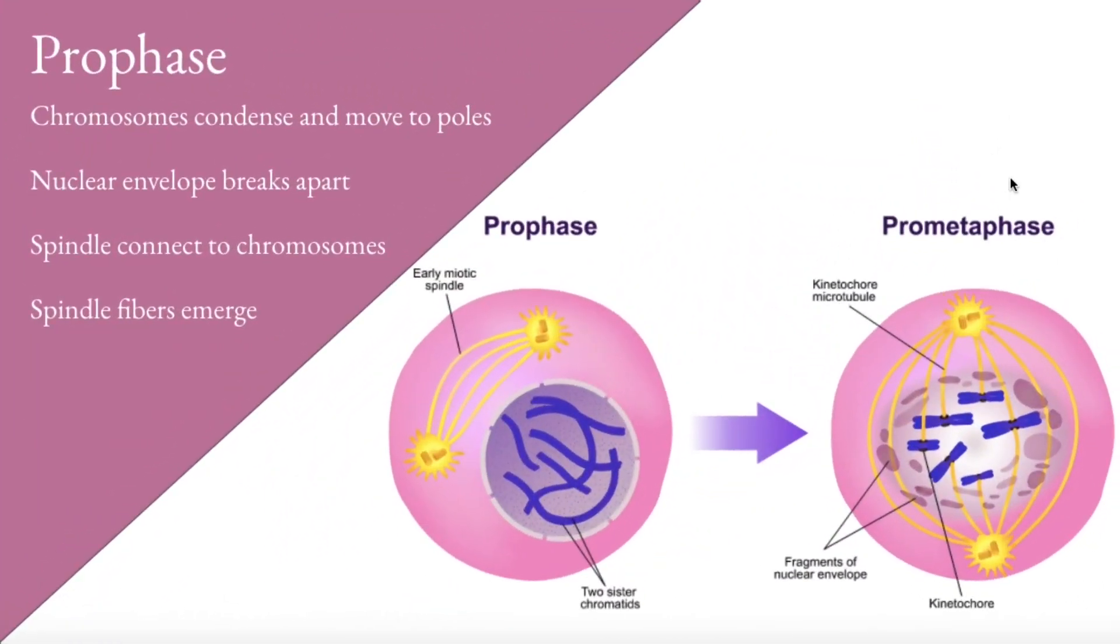Prophase is the first phase. In prophase, the chromosomes condense and move to the poles. Nuclear envelope breaks apart so that the DNA can move to the middle in the next part of mitosis called metaphase.